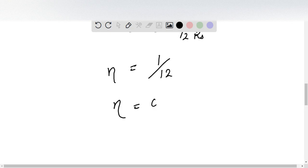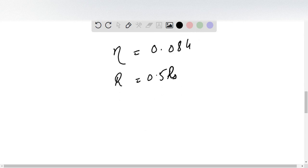This is 0.084. Now we need to calculate the efficiency of accretion luminosity of a rotating black hole whose radius is R = 0.5R_S.